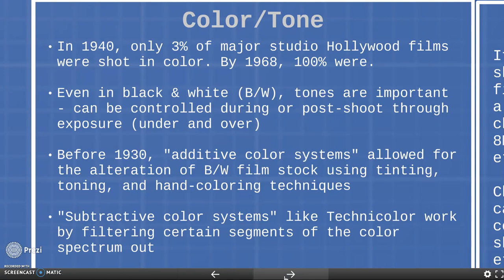Talking about color is really important when we think about film stock, because at a certain point in film history the actual film stock being used was black and white and did not show color. Prior to 1940, almost all films were shot in black and white — only three percent of major studio films were shot in color in 1940. By nearly 1970, almost all films are shot in color. Today, if you're shooting in black and white there's usually a very specific reason, because technologically shooting in color is far more accessible now than it's ever been. Actually, shooting in black and white is probably a little more difficult today because so much filmmaking technology is based on color.